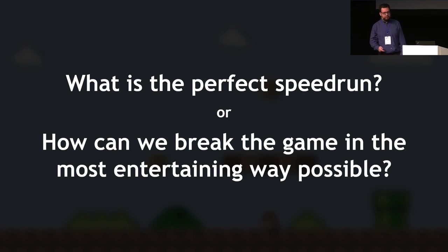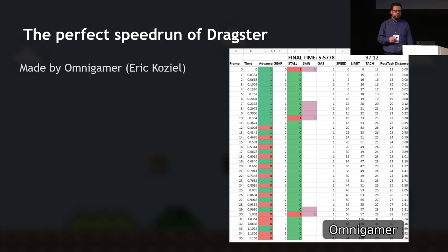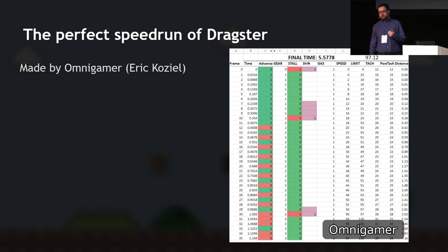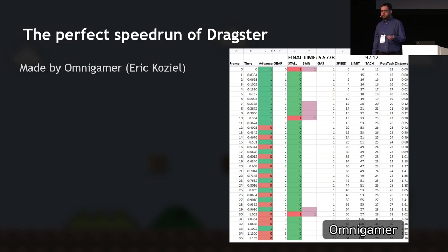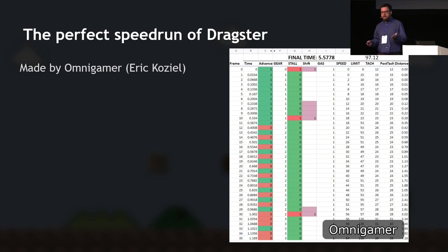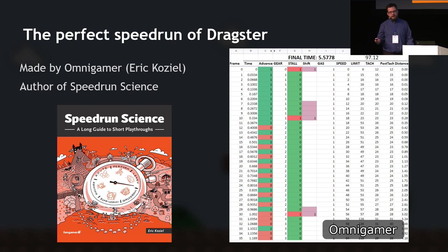The question 'what is the perfect speedrun' is usually extremely difficult to answer. I could only find a very few examples where the question is actually answered. One of them is a game called Dragster on the Atari 2600 — it's about 45 years old and very simple. The perfect speedrun was mathematically solved and proven by Omnigamer, or Eric Cossiel, who also wrote a book on speedrunning called 'Speedrun Science,' which I recommend.